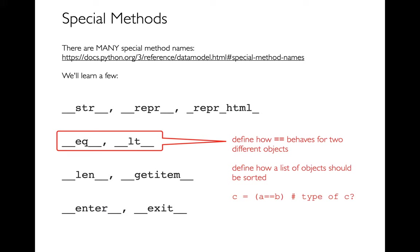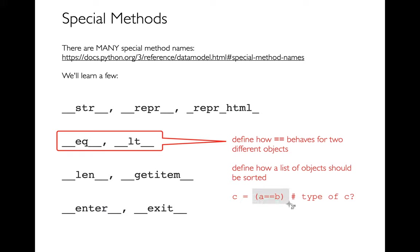Second, I'm going to talk about the equal-equal operator — are two objects the same? If you look at this snippet of code where I say C equals A == B, what is the type of C? You're probably thinking Boolean, and that's true 99% of the time, but it depends on the type of A and B. If either A or B is a pandas Series, you wouldn't get a single Boolean. Instead, you'd get a Series of Booleans — comparing element by element. The people writing pandas had to basically hijack the == operator, and we're going to learn how to do that for our own new types.